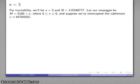To keep this example reasonably comprehensible, we'll use a public exponent of e equals 3 and a public modulus N equals 115348777. Let our messages be M equals 5180 plus x, where x is a number between 0 and 9, and suppose we've intercepted the ciphertext c equals 66784502.